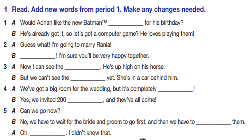Now let's do exercise number one: read and add new words from Period 1, making any changes needed. In this exercise you have incomplete sentences, and you are going to complete them by using the words from activity number one in Period 1.